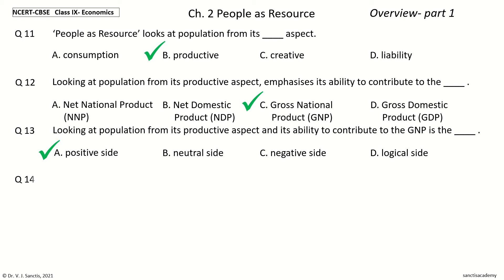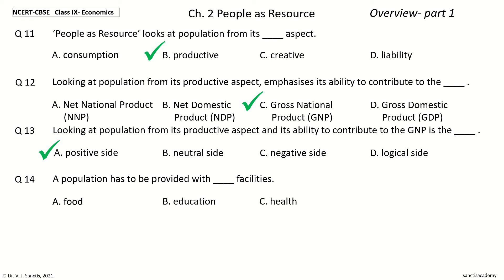Question 14: A Population has to be provided with ___ Facilities. The options are: Food, Education, Health, All of These. Your time to choose. And the answer is: All of These. So, a Population has to be provided with Food, Education, and Health Facilities.